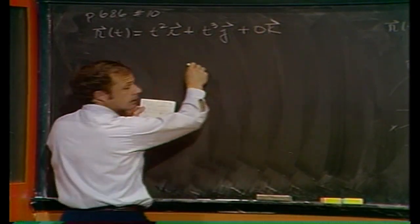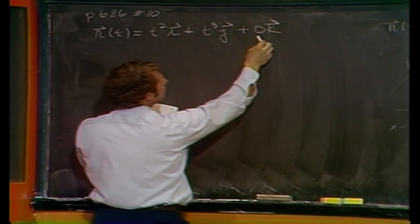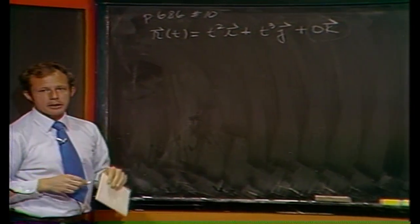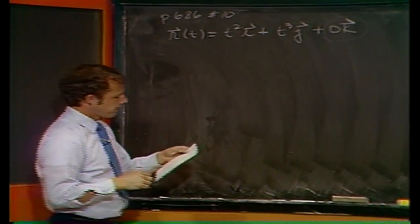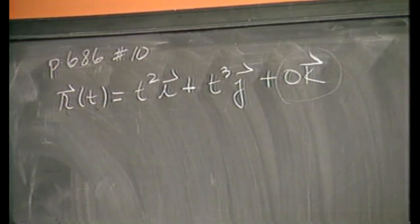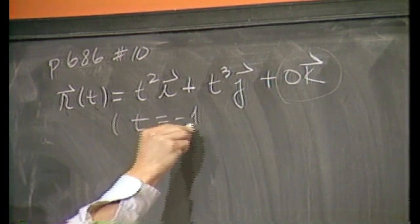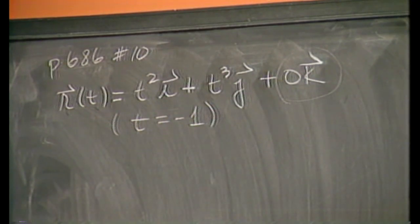I picked this one because it is a two-dimensional problem. There is no k component, so there's no need for a z-axis. And the point of interest, as it turns out, will be at t equals minus 1.